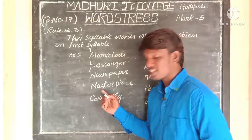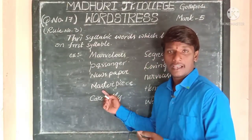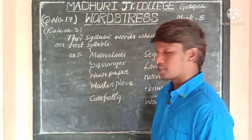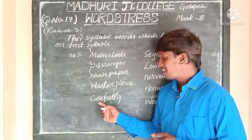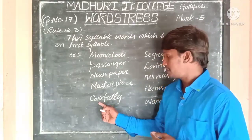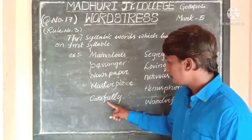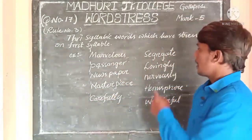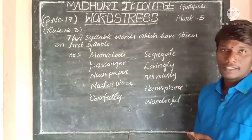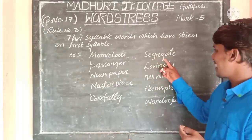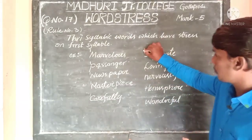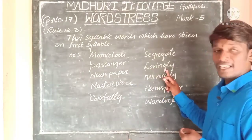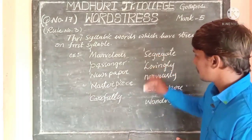Coming to 'masterpiece' — MA-sta-piece — 3 syllables, so stress is on the first syllable. Next is 'carefully' — CARE-ful-ly — 3 syllables, so stress is on the first syllable. Next is 'segregate' — SEG-re-gate — 3 syllables, so stress is on the first syllable. And 'lovingly' — LOV-ing-ly — 3 syllables, so stress is on the first syllable.